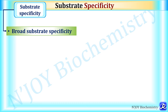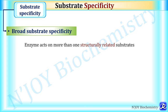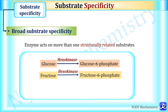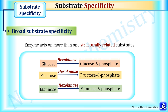Broad substrate specificity means the enzyme acts on more than one structurally related substrate. For example, hexokinase acts on glucose to form glucose-6-phosphate, but it can also act on fructose to form fructose-6-phosphate and on mannose to form mannose-6-phosphate. So hexokinase has broad substrate specificity, acting on glucose, fructose, and mannose.